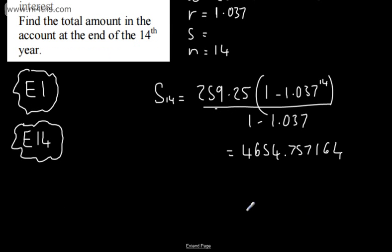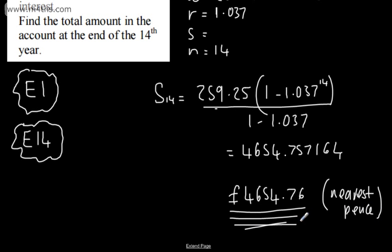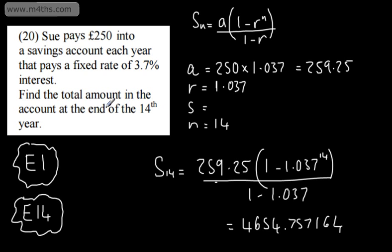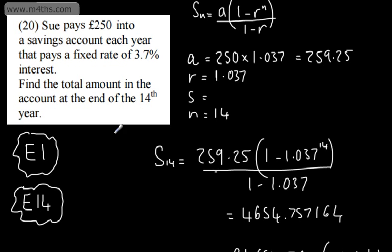So we'll say £4654.76, and that's to nearest pence. Again, no level of accuracy given. We'll just give it as a sensible figure. And that is the amount. So all I've done is taken the first year, end of the first year, and then looked at using the formula to find the end of the 14th. Some people prefer to take 250 as a first term. I would prefer to take the 250 times by the 1.037, and then sub it in for our 14 terms.